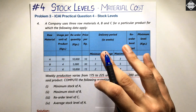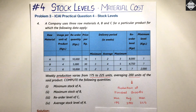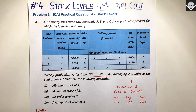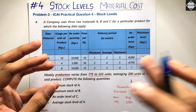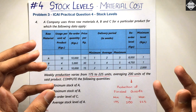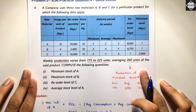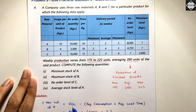The requirements are: minimum stock level of A, maximum stock level of B, reorder level of C, and average stock level of A. Let's begin solving. The first requirement is minimum stock level of A. Recall the formula: minimum level equals reorder level minus average consumption into average lead time. In the bracket, it is always consumption into lead time — you just need to remember whether it is average, minimum, or maximum.